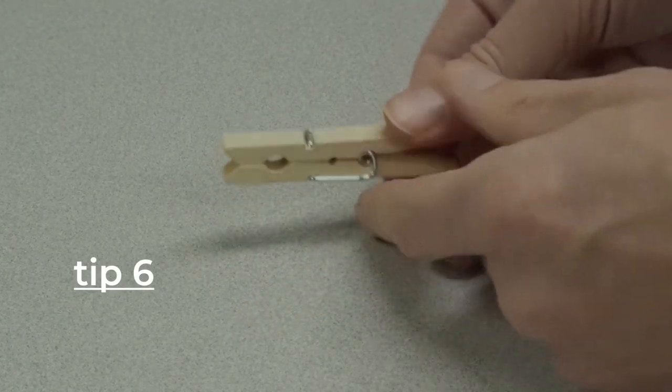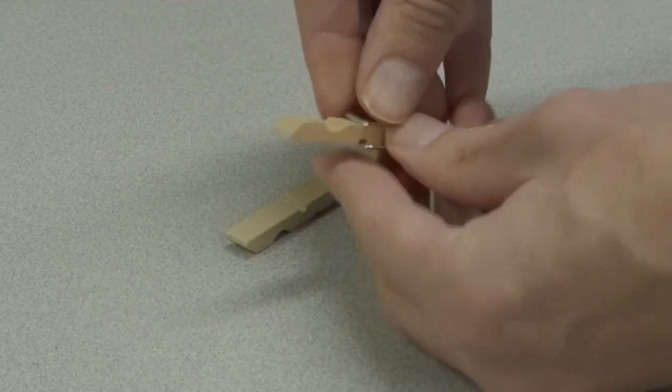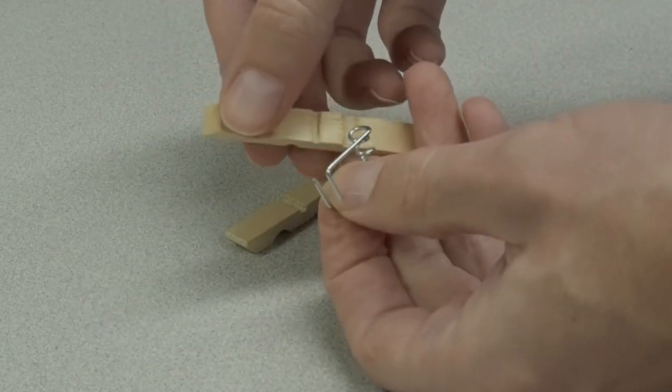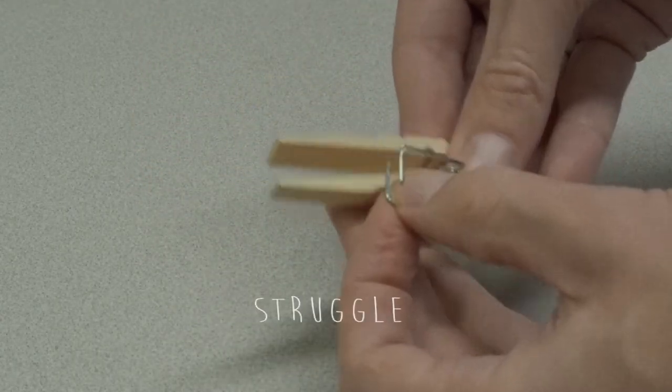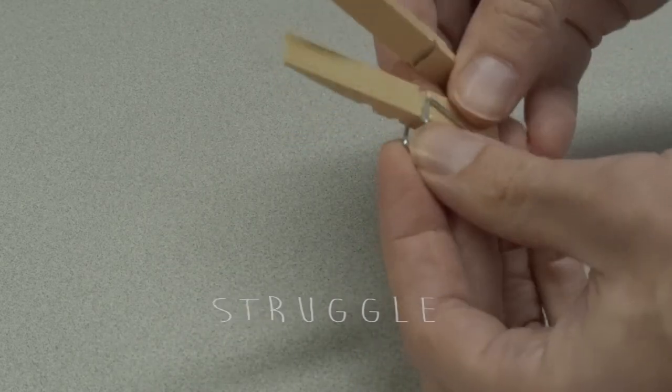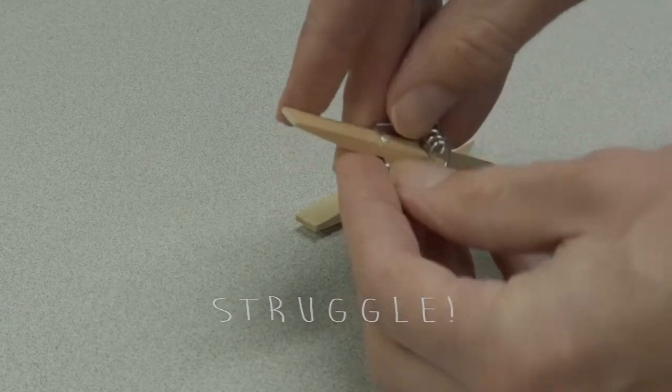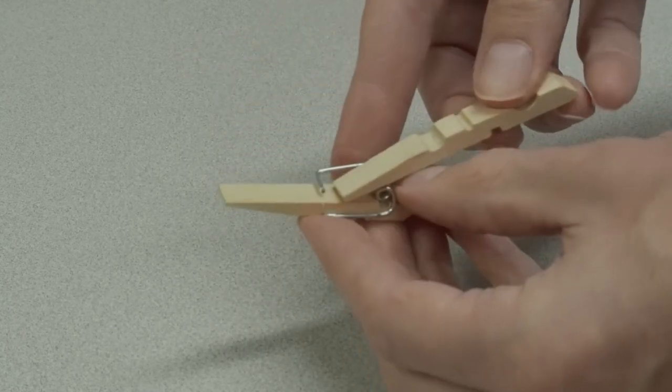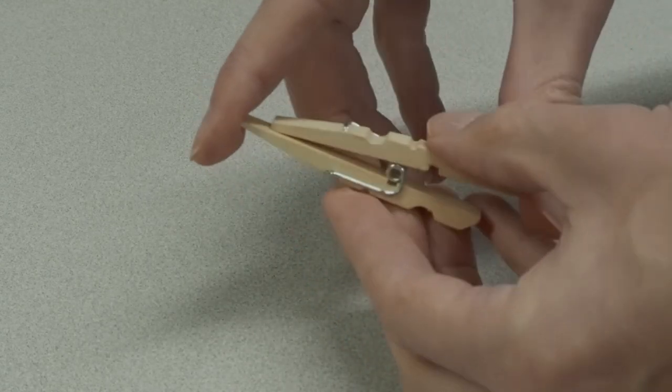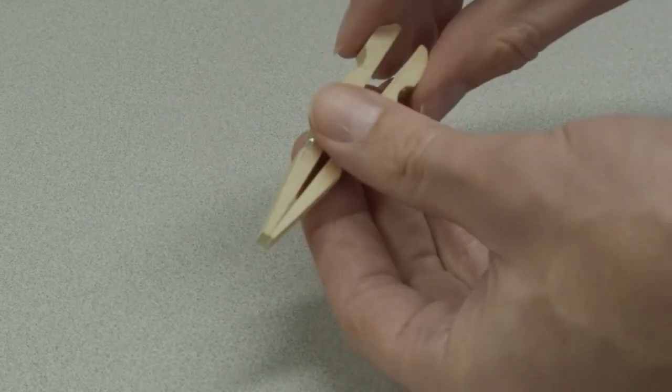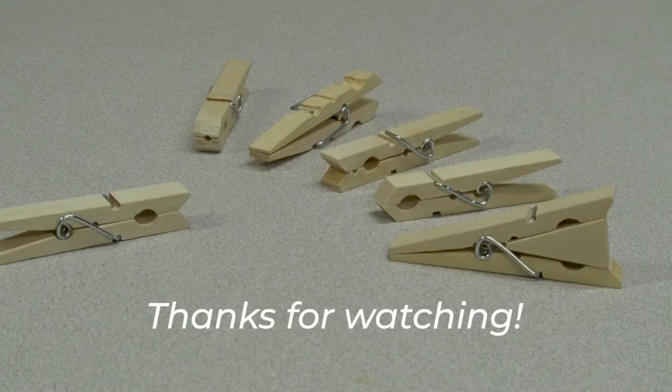Tip number six: reverse the jaws. In this case it works way better than driving a wedge as the jeweler's ring clamp, except for the struggle of course of fiddling with the cheap spring and the cheap little clothespin. In this case, however, once you finally manage to get it assembled, it provides a very nice narrow clamp. And that's it, thanks for watching.